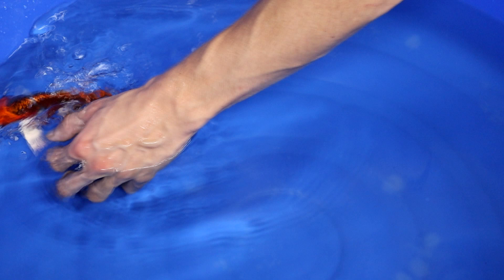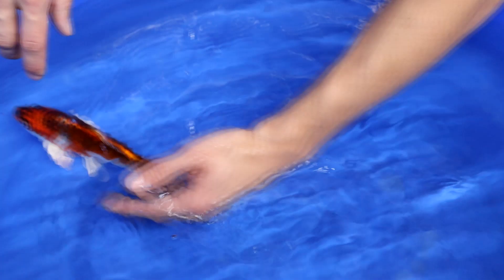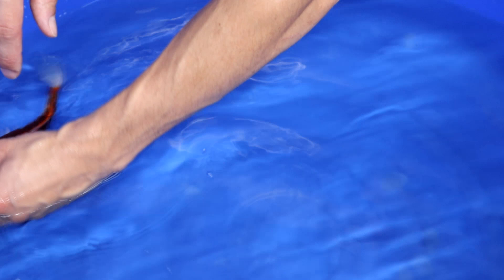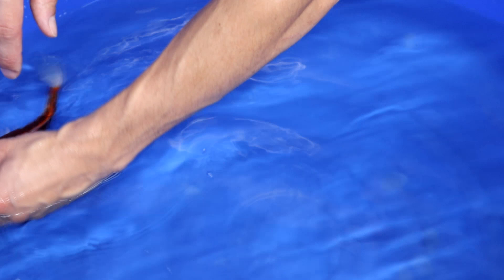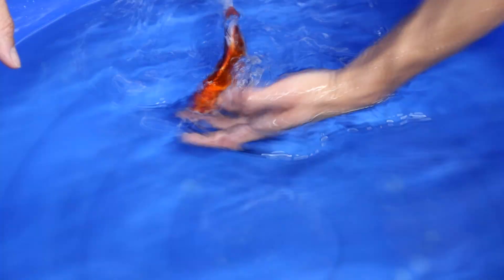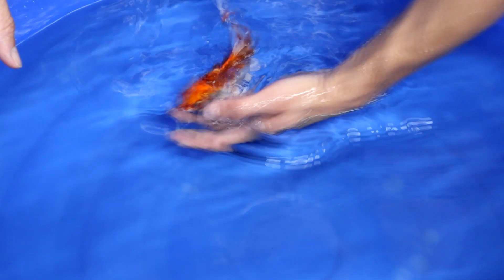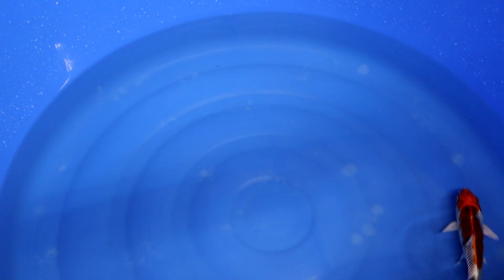And then the second aspect, same as for the Kohaku, is that also for Kujaku we prefer that the tail section, the last part before the tail, so the odom, this area here is white. So this one is a little bit better, but still the last part is orange. We prefer it to be white. So actually what you want with a good odom is that the orange stops around here and that the last centimeter is all white.